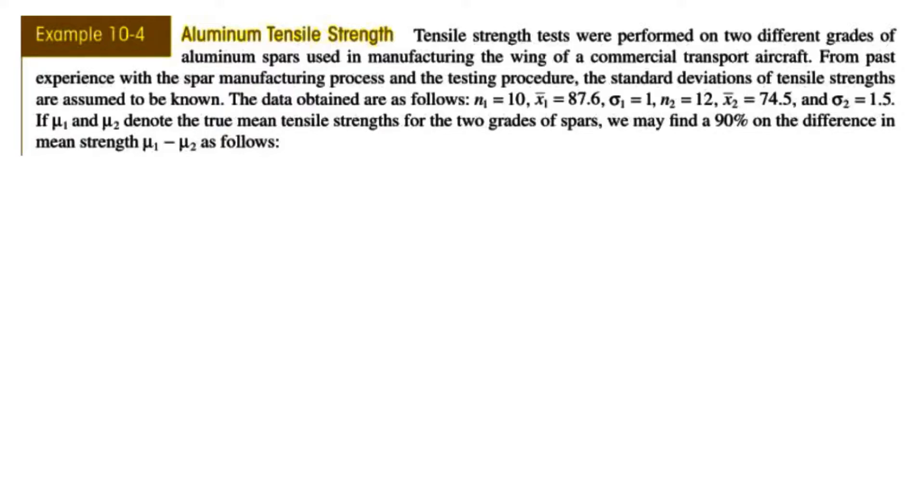So suppose that you want to calculate the 90% confidence interval for μ1 minus μ2. So you have two types of aluminum spars that you're using to manufacture the wing, and you want to see where the difference between the average of the strength of the two types of wing falls into.